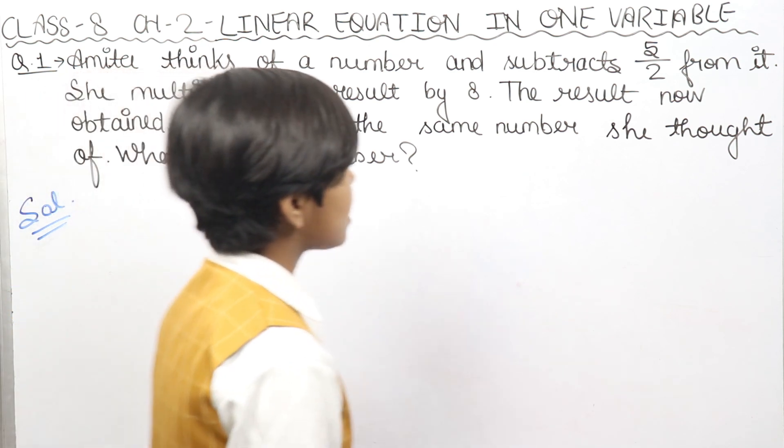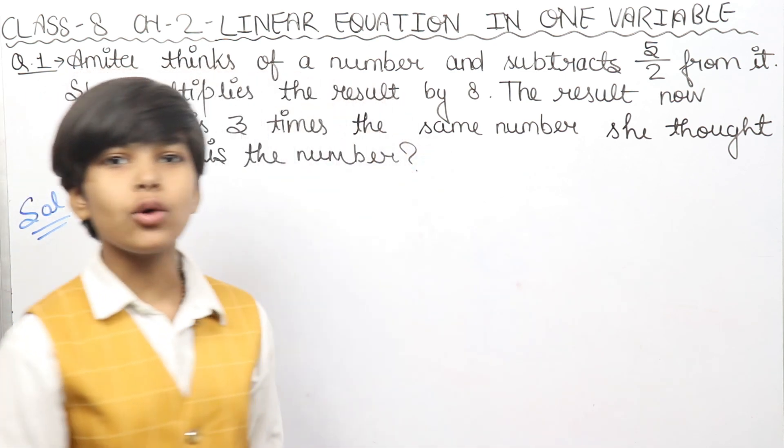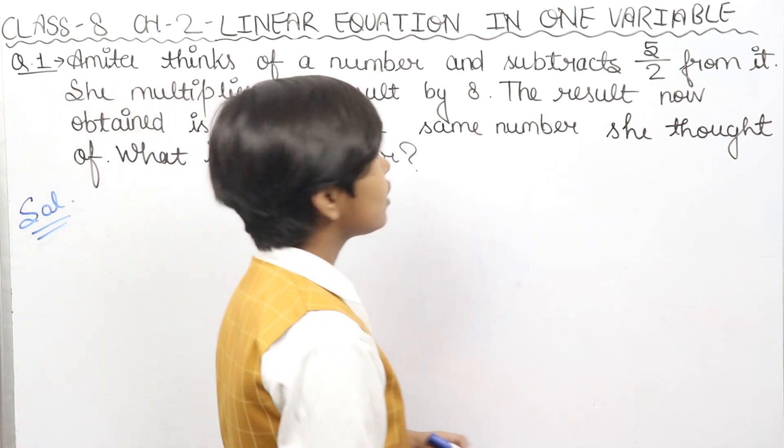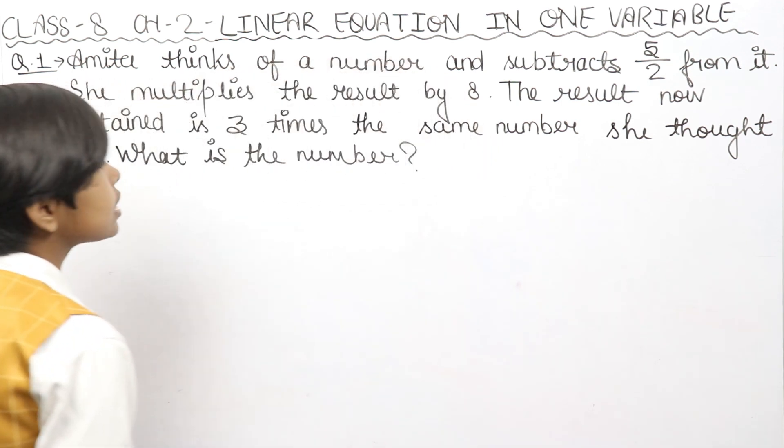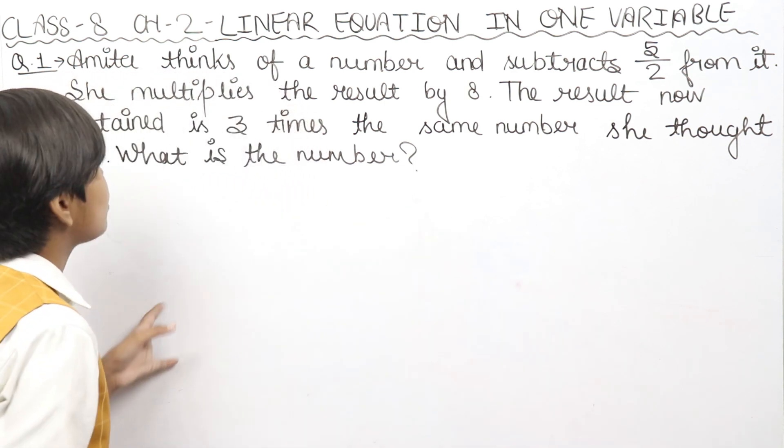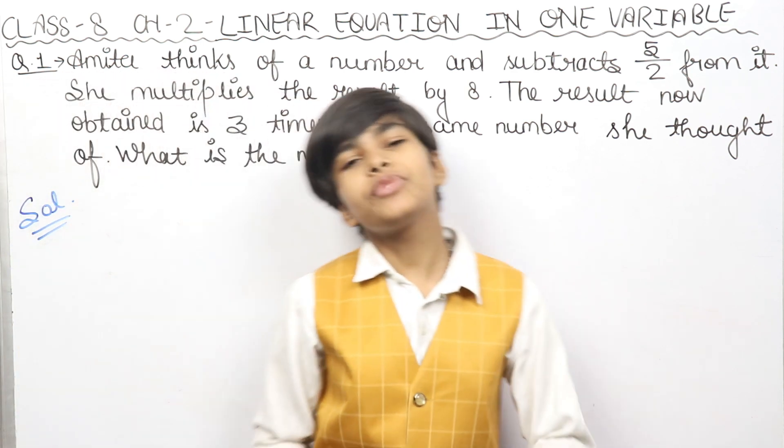She multiplies the result by 8. Now the result came, she multiplied by 8. The result now obtained is 3 times the same number she thought of. What is the number?